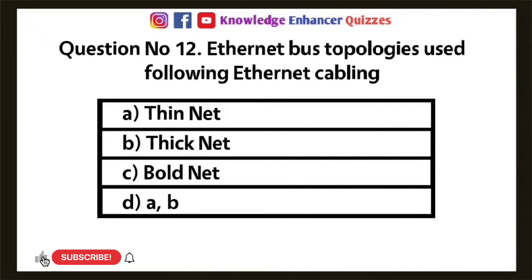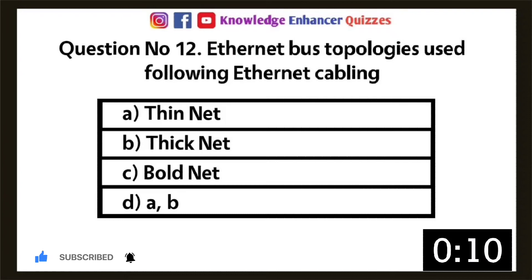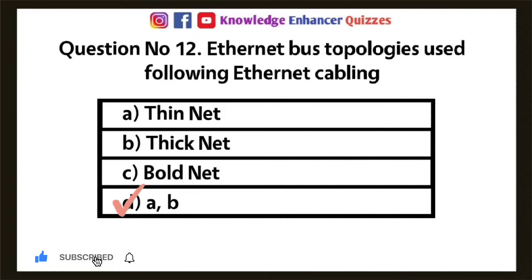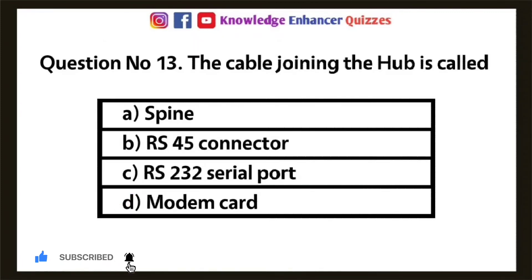Question 12: Ethernet bus topologies use the following Ethernet cabling — Option A: Thin net, Option B: Thick net, Option C: Bold net, Option D: A and B. Option D is the right answer.